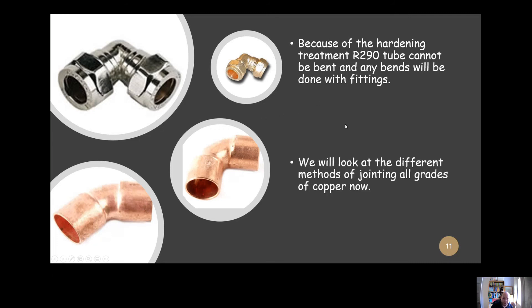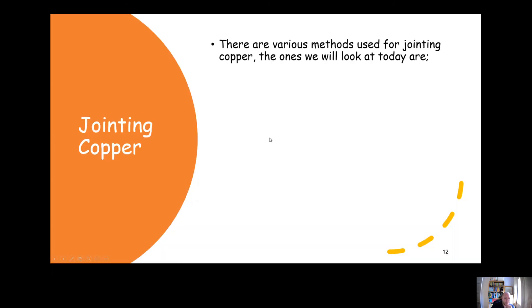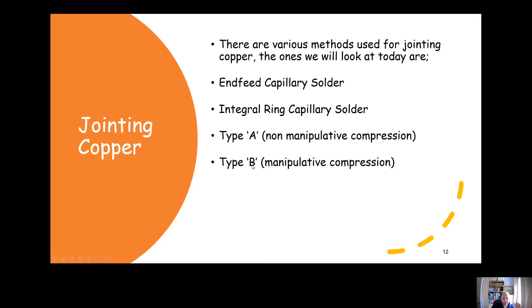There's lots of different ways of joining copper. One is through using end feed capillary solder, and another is using an integral solder ring capillary. They're very similar processes with just a subtle difference. You could also joint it with Type A non-manipulative compression fittings or Type B manipulative compression fittings. There are similarities, and we're going to look at the key differences. You could also use press fit fittings to joint it or push fit fittings.